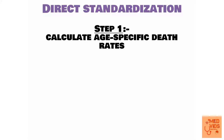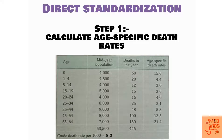Let us see how to calculate direct standardization. The first step is to calculate age-specific death rates for the given population. In this table you can see the various age groups in population A. We have the mid-year population in the various age groups in the second column and the number of deaths occurring in those age groups in the third column. We are going to calculate age-specific death rates, as explained in our previous video.